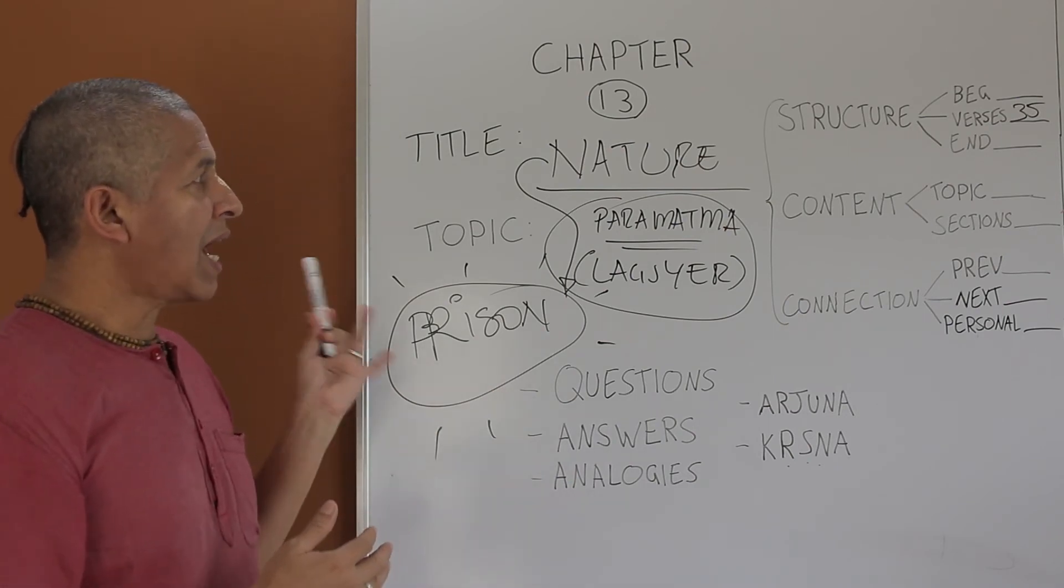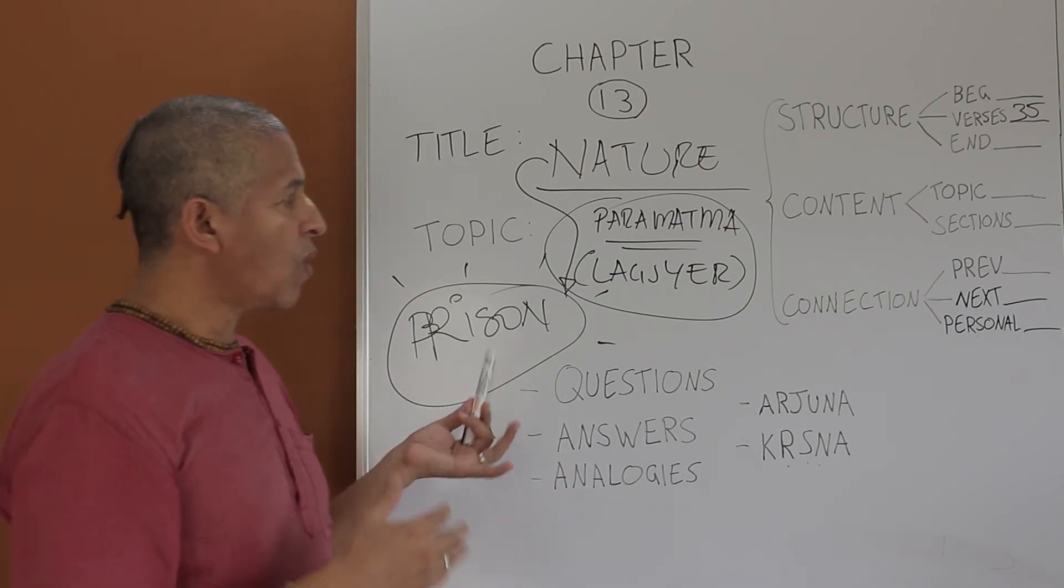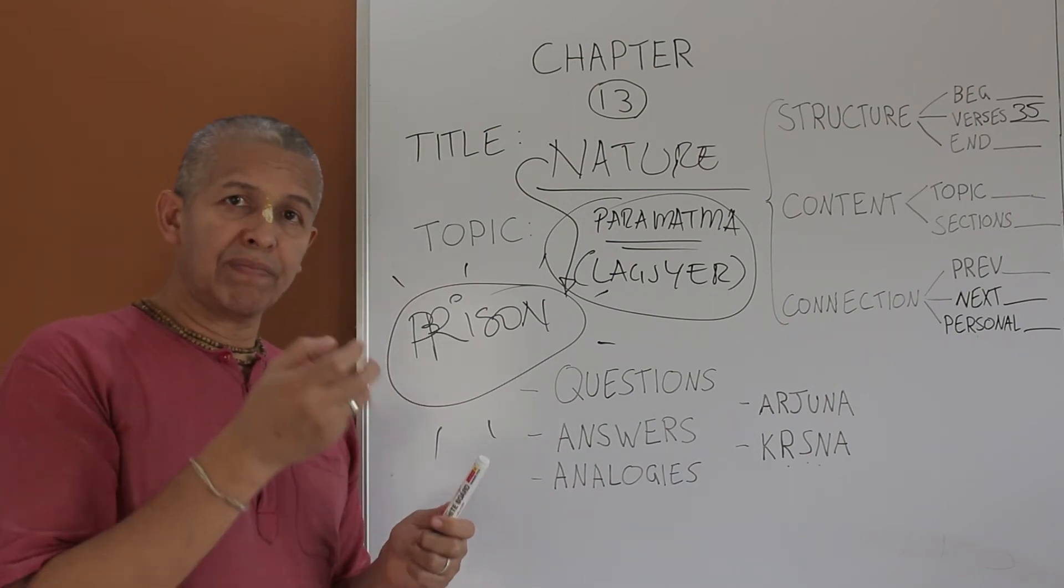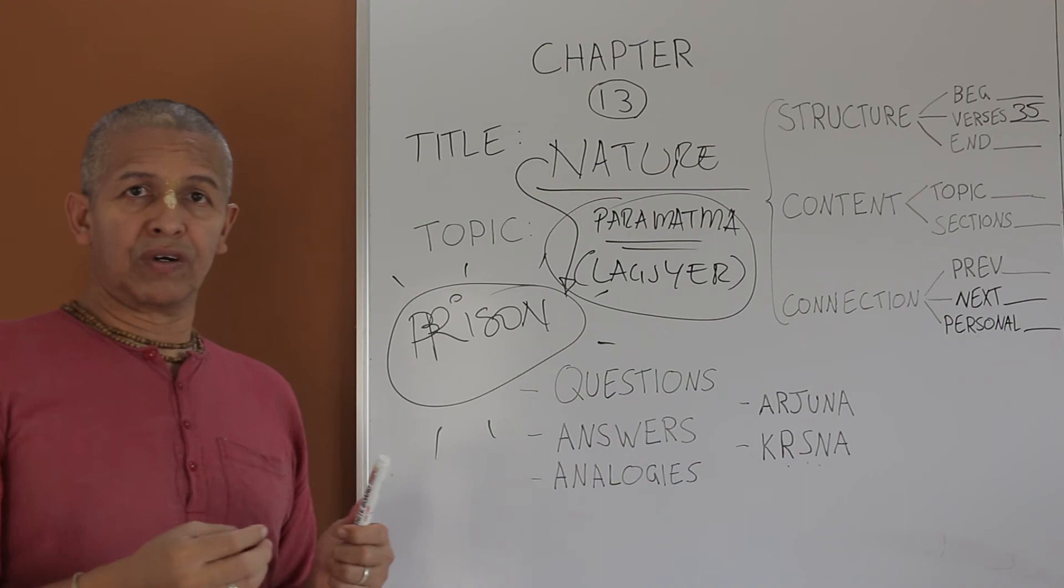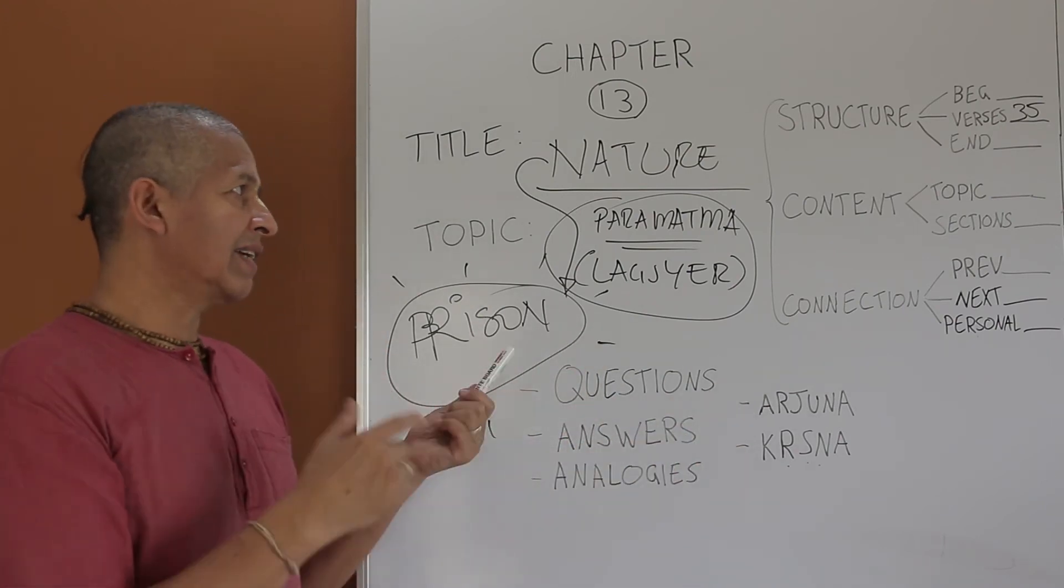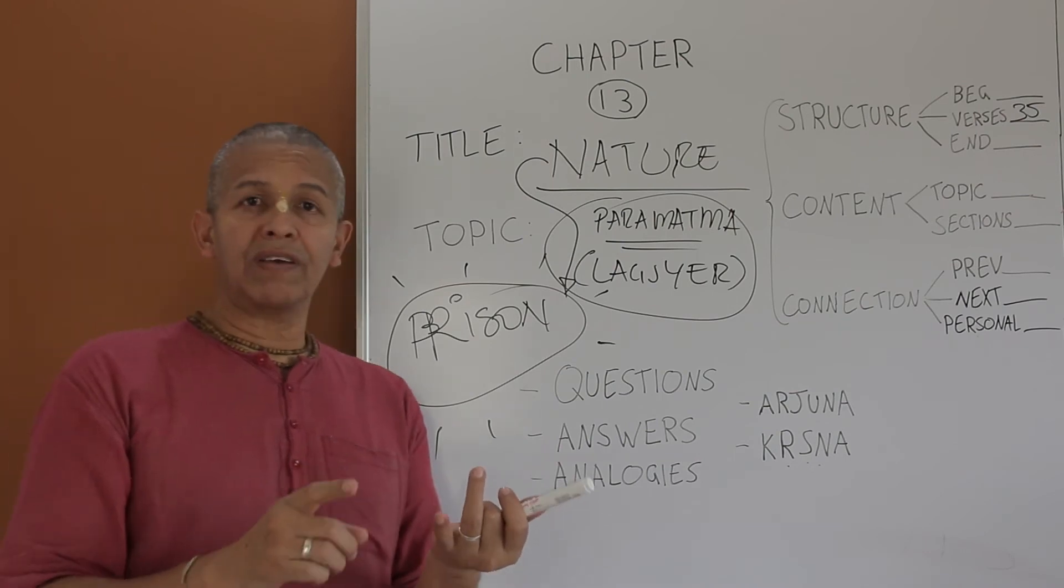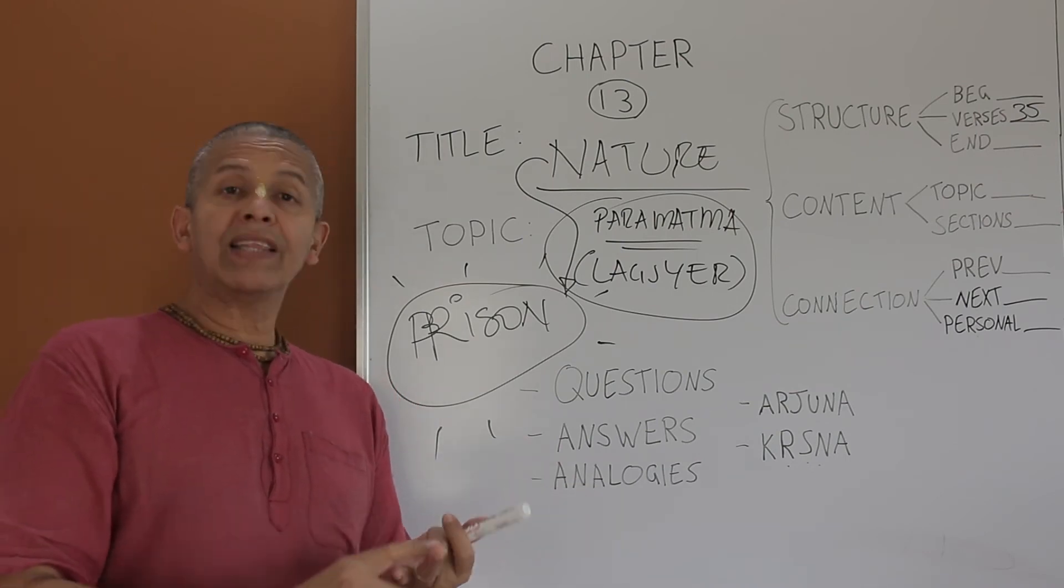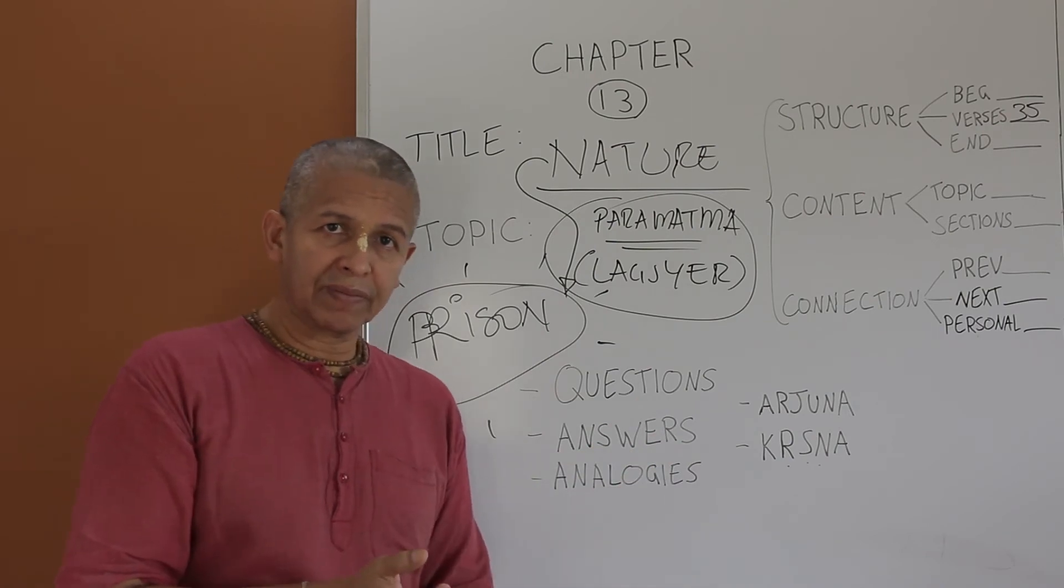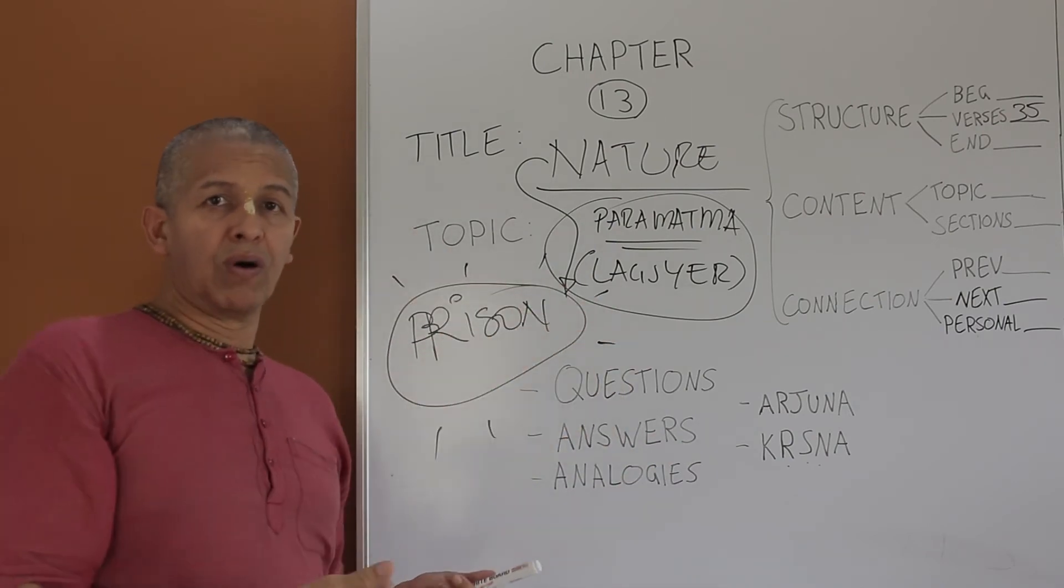And how the chapter ends, Krishna once again, he is emphasizing the value, the importance of devotional service. And he says basically, in the last verse, in text number 35, if you know the difference between the body and the soul, and you understand the process of liberation, then you can achieve the supreme goal, freedom.